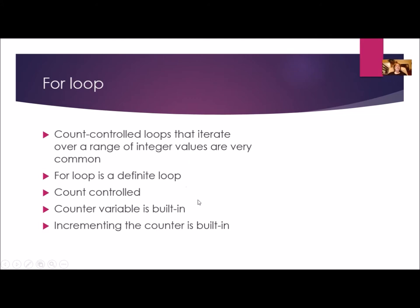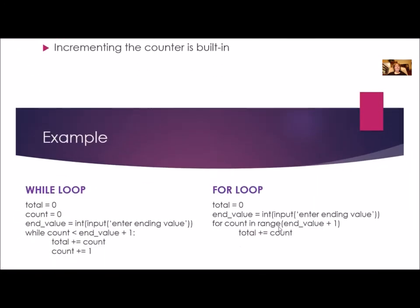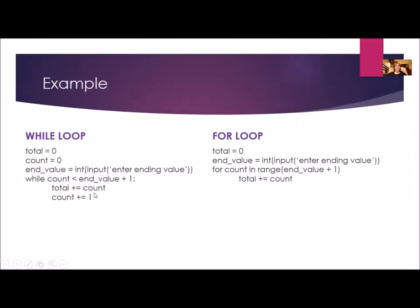A for loop is a definite loop — it is count-controlled, and the counter variable is built in, its initialization is built in, and incrementing the counter is also built in. You can see a while loop has two fewer lines because the initializing and incrementing is built into the for loop, so you don't have to do it.